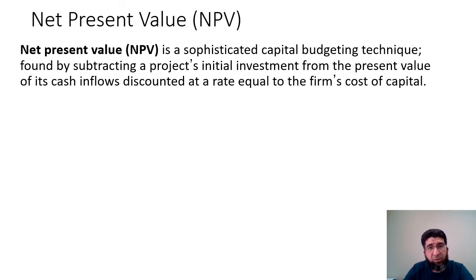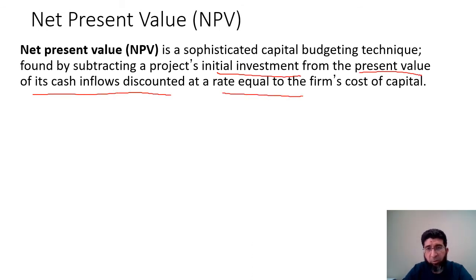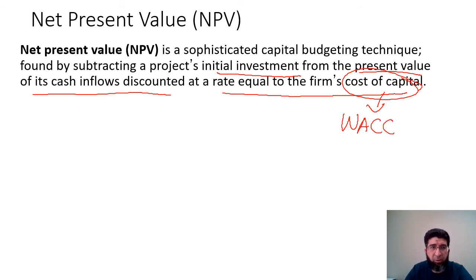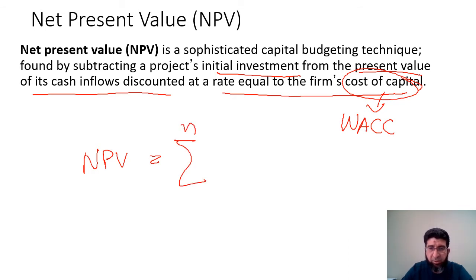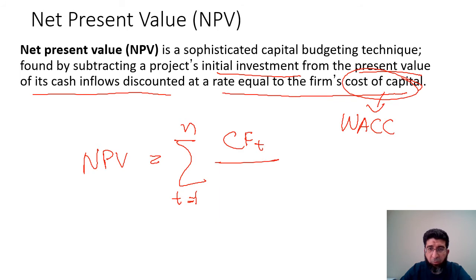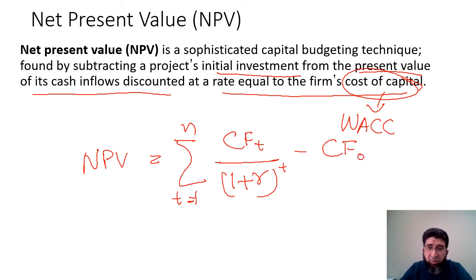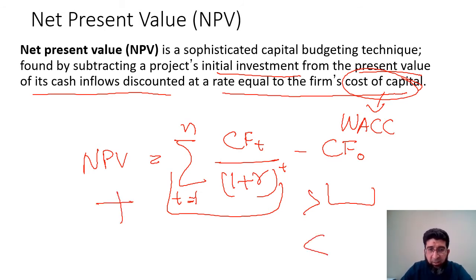Here comes the more sophisticated model: net present value (NPV). NPV is a capital budgeting technique found by subtracting the project's initial investment from the present value of all its cash flows discounted at a rate equal to the firm's cost of capital — normally the weighted average cost of capital (WACC). The formula is: NPV = Σ(t=1 to N) [CF_t / (1+R)^t] − CF₀. The cash outflow CF₀ must be smaller than the sum of discounted inflows in order to achieve a positive NPV. Negative NPVs are straightaway rejected.